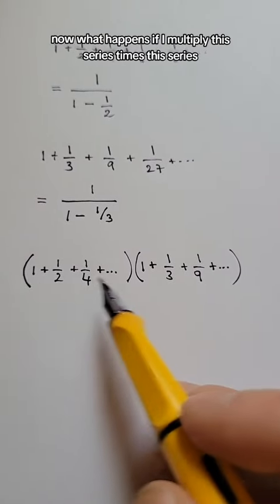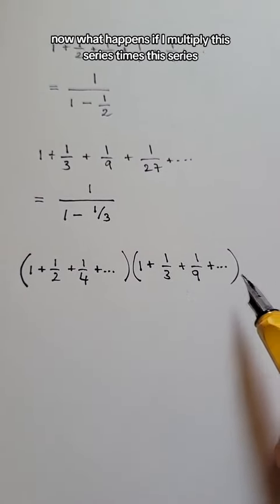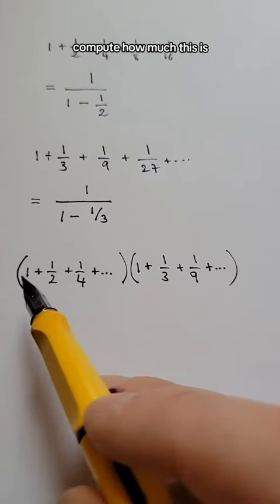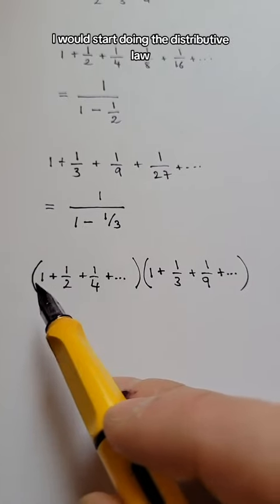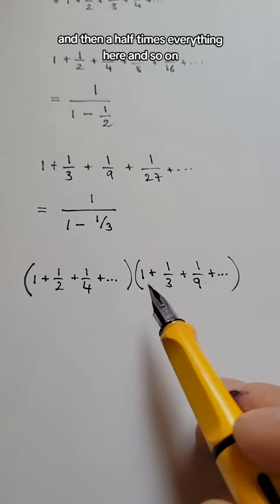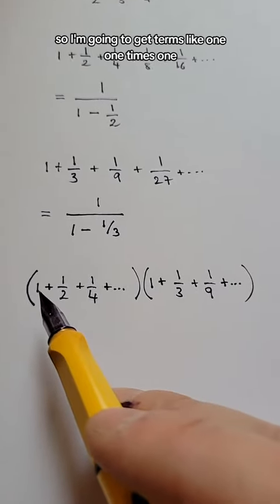Now, what happens if I multiply this series times this series? Well, then, to compute how much this is, I would start doing the distributive law, 1 times everything here, and then 1/2 times everything here, and so on.